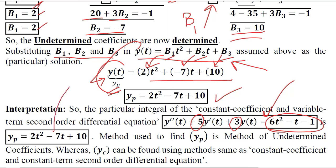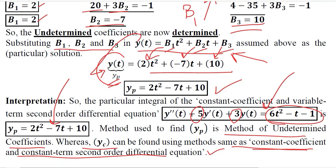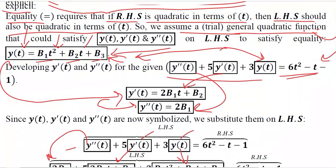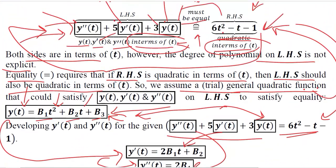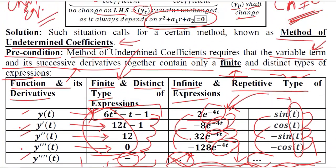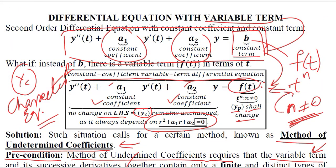This is the particular integral of the given second-order differential equation with a variable term on the right-hand side and constant coefficients on the left-hand side, found using the method of undetermined coefficients. We remember that yc can be found using the same process as for the constant coefficient, constant term method of second-order differential equations, because the right-hand side doesn't affect yc. This is how we solve a second-order differential equation with a variable term on the right-hand side and constant coefficients on the left-hand side — a slightly different case that we have dealt with today. Thank you.